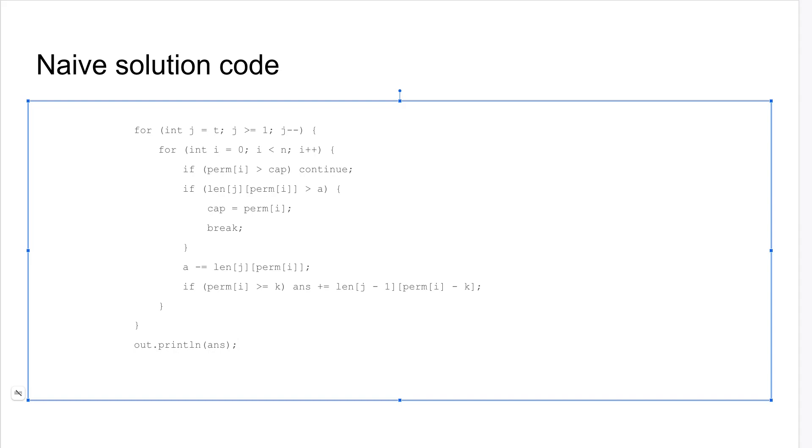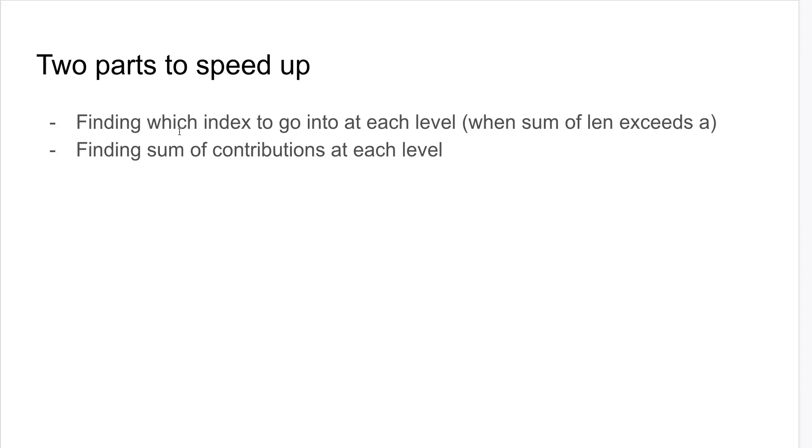So there are two parts we can speed up. One is finding which index to go to at each level. And the other is finding the sum of contributions at each level.